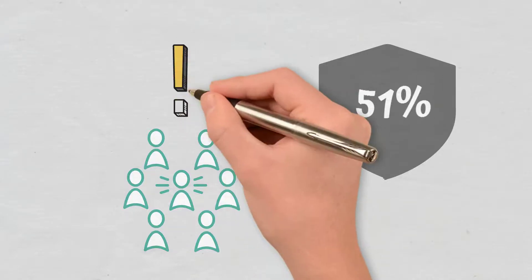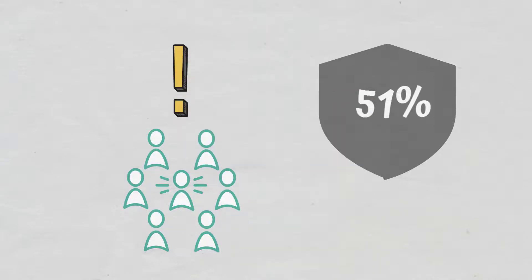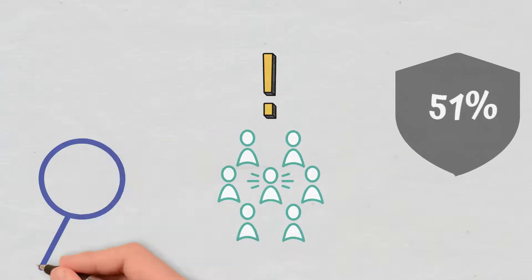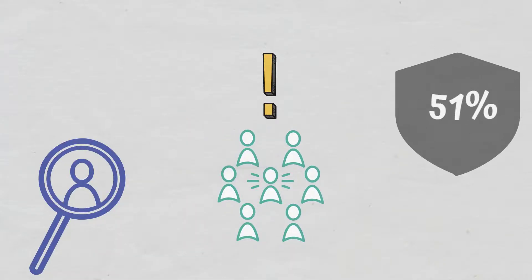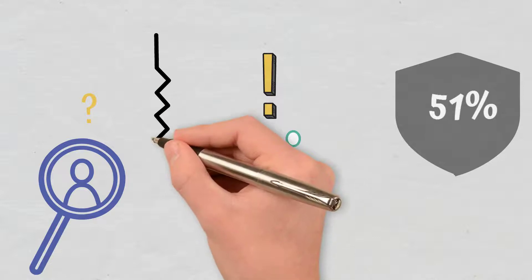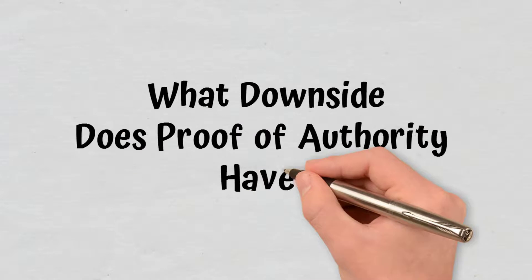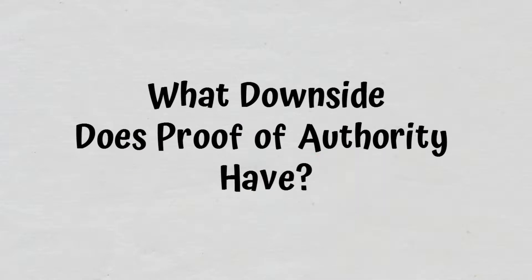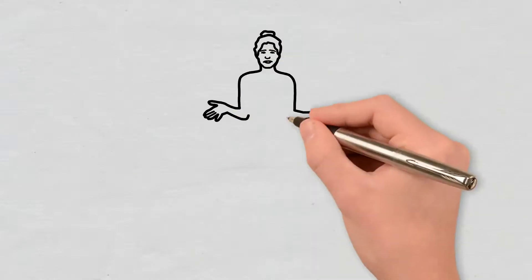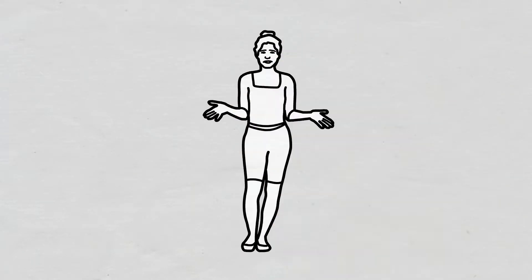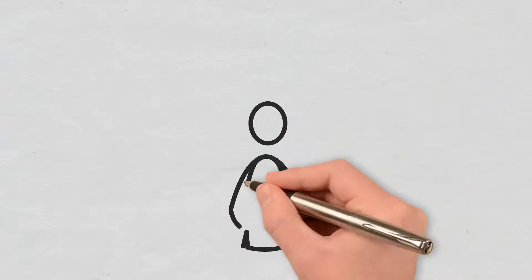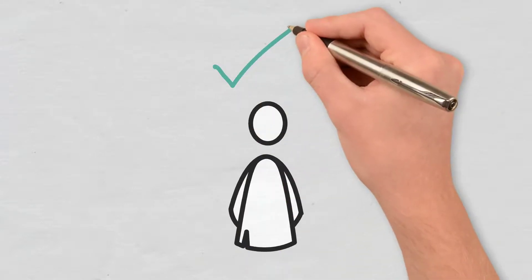Furthermore, nodes are pre-authenticated, so in the case that one is not available, the network is able to remove it from the validation process. What downsides does Proof of Authority have? Just like Proof of Work or Proof of Stake, Proof of Authority also has its own limitations.